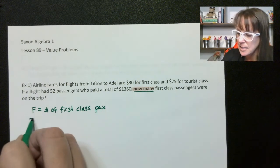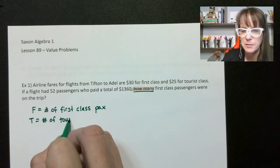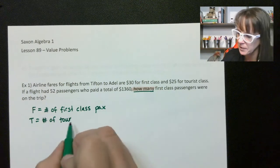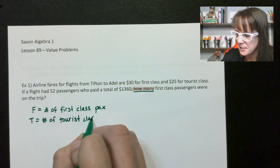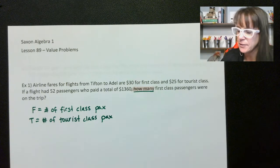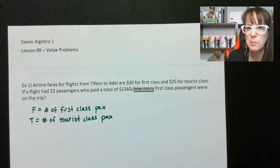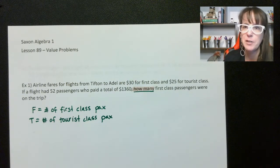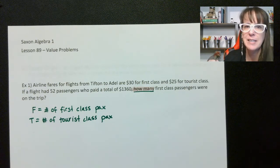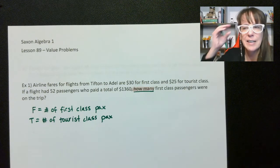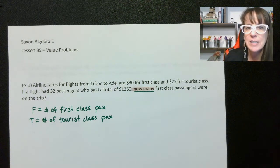T equals the number of tourist class passengers. This is called your key or your legend. It's really important that you have this. If you get a word problem and you have no idea what's going on, the best thing you can do is ask: what am I looking for? Then come up with a key or a legend.